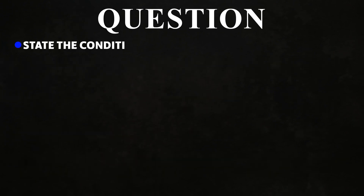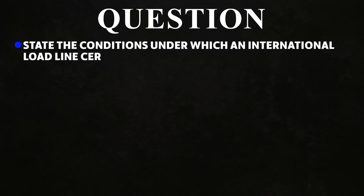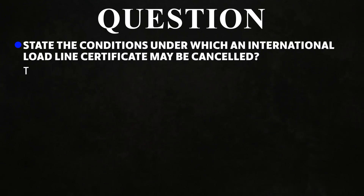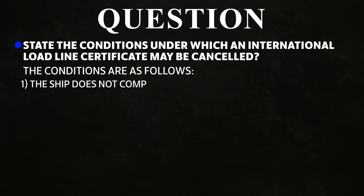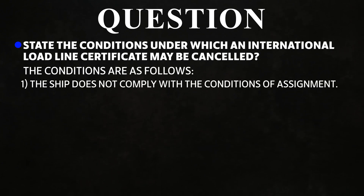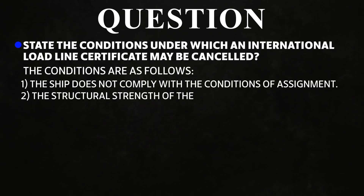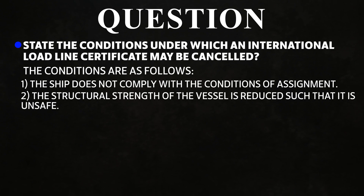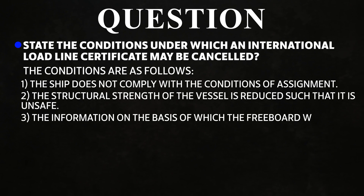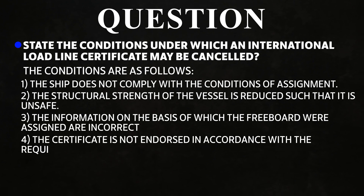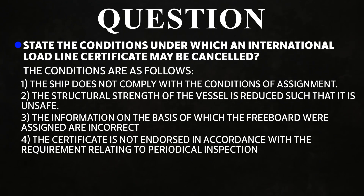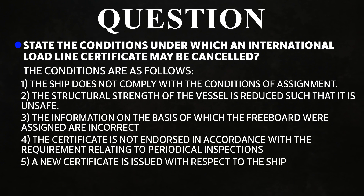Question: State the conditions under which an International Load Line Certificate may be cancelled. The conditions are: (1) the ship does not comply with the conditions of assignment; (2) the structural strength of the vessel is reduced such that it is unsafe; (3) the information on which the freeboards were assigned is incorrect; (4) the certificate is not endorsed in accordance with requirements relating to periodical inspections; (5) a new certificate is issued with respect to the ship; (6) change of registry to another country.